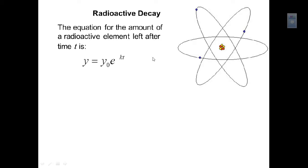Another application of the decay formula is radioactive decay. The equation for the amount of a radioactive element left after time t is y equals y sub zero times e to the negative kt. The k is negative because this represents decay — the element is losing mass by shooting particles off into space, losing mass continuously.